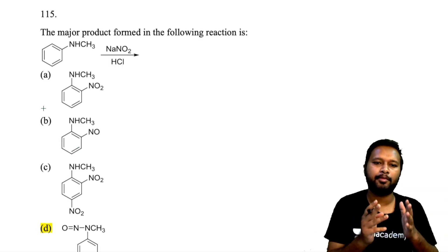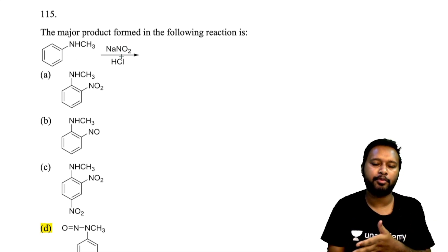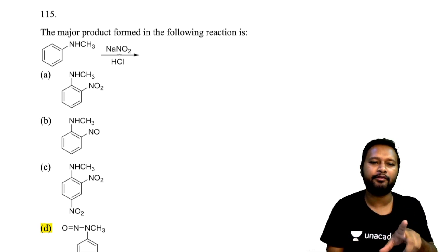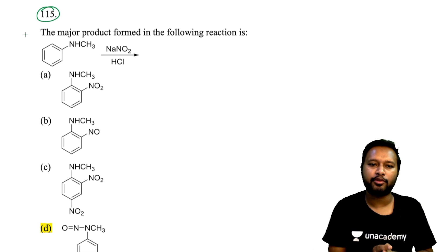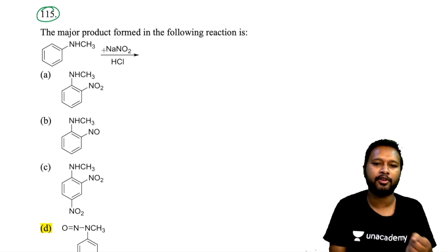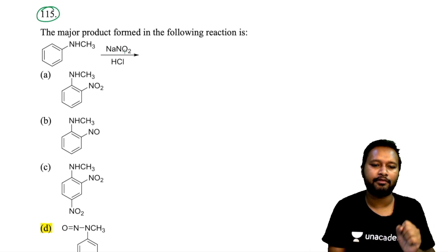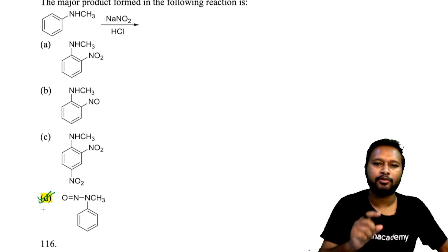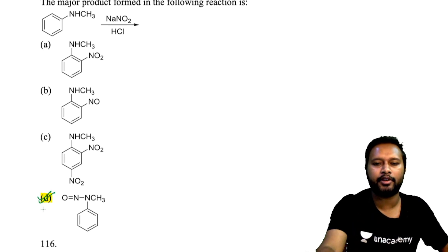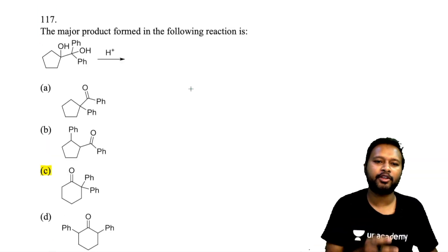Question 115: a named reaction where a hydrogen on nitrogen is substituted by a NO₂ group followed by an elimination. The correct answer is option D. The instructor asks viewers to identify the name of this reaction in the comments — he wants to test if they recognize it, noting it's a simple, basic organic reaction.